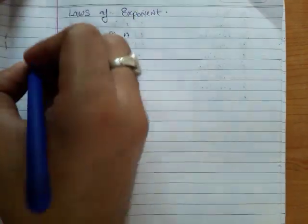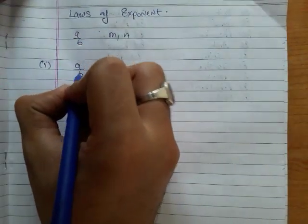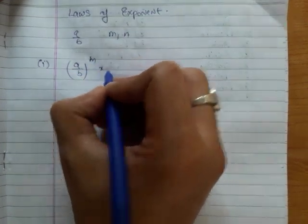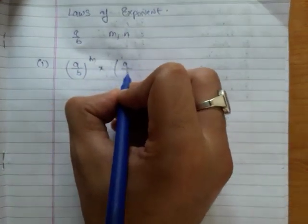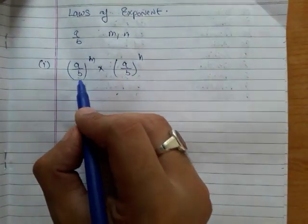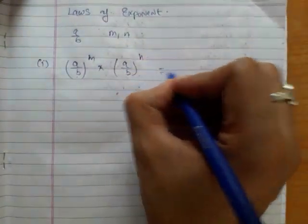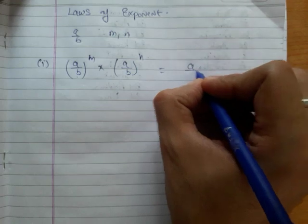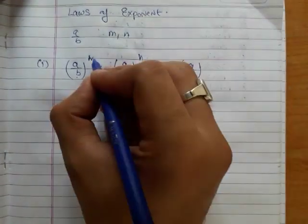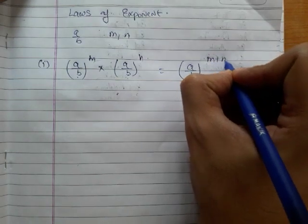The first law says that if there is a rational number a over b whose power is m, and it is multiplied by the same rational number with power n — so the base is same and powers are different — then we can write that base stays the same and the powers of the given rational number will be added.